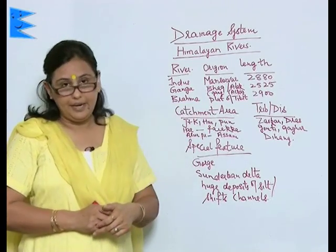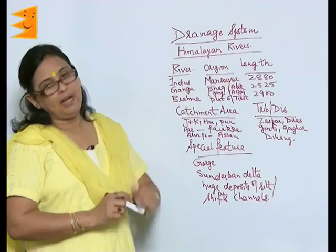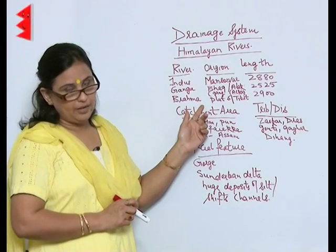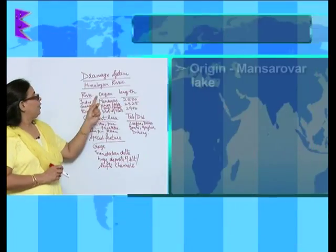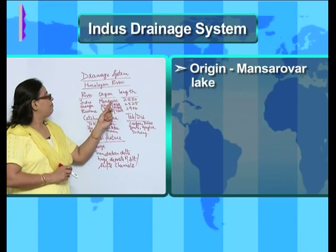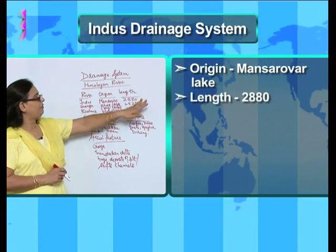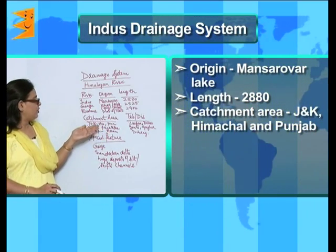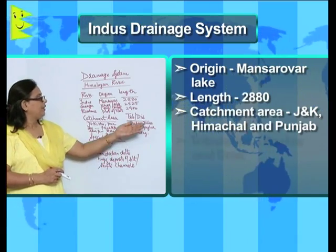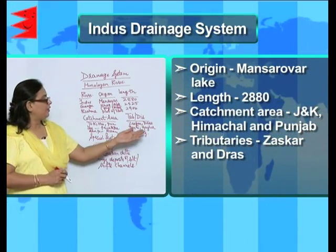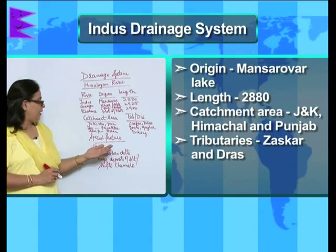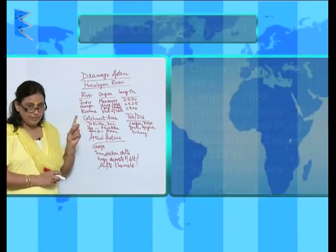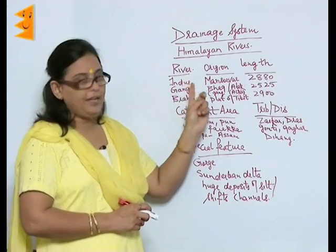When I talk of the Indus drainage system — the first Himalayan river — remember there are three: Indus, Ganga, and Brahmaputra. The Indus river originates at Mansarover lake, its length is 2880 kilometers, and it flows through Jammu and Kashmir, Himachal, and Punjab. The tributaries are Jaskar and Dras, and the special feature is that the Indus river forms gorges.